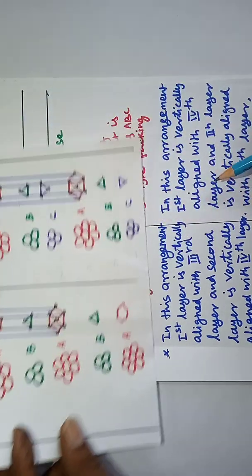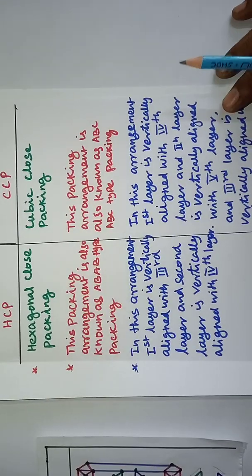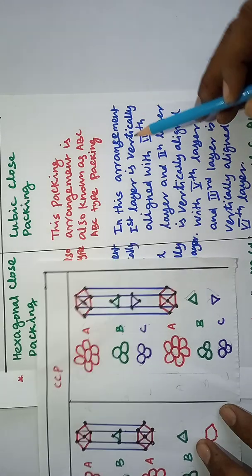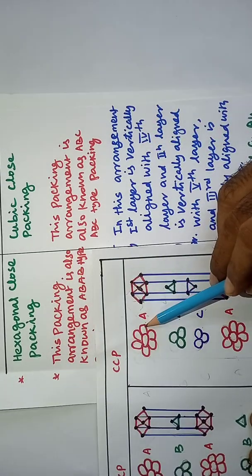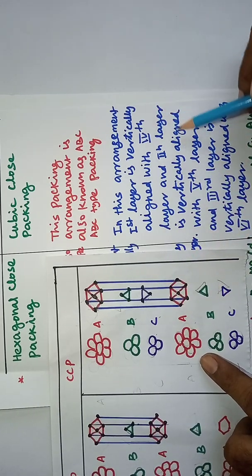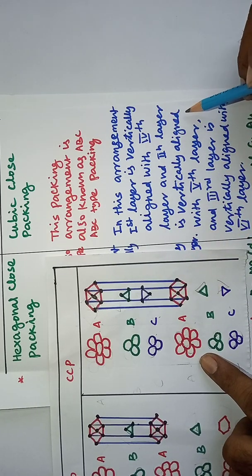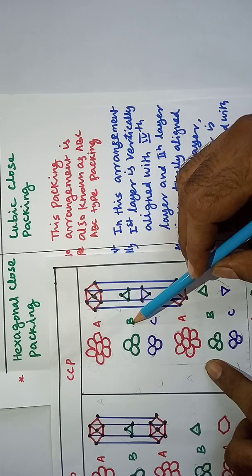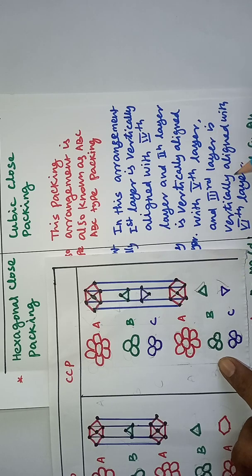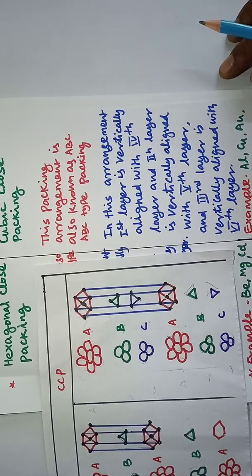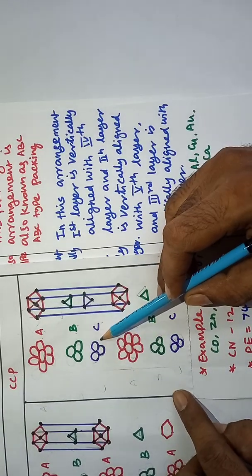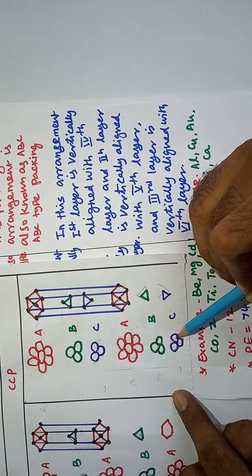In CCP arrangements, the first layer is vertically aligned with the fourth layer. The second layer is vertically aligned with the fifth layer. And the third layer is vertically aligned with the sixth layer.